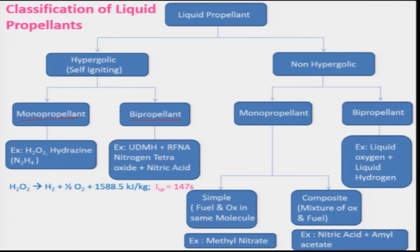Nitrogen tetroxide and nitric acid is another example of hypergolic bipropellant which is also being used, and this can give a moderate to lower range of ISP.